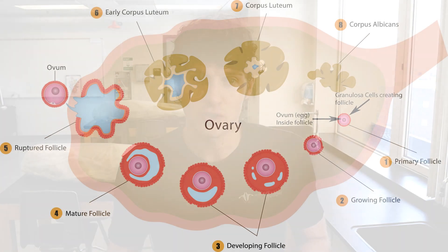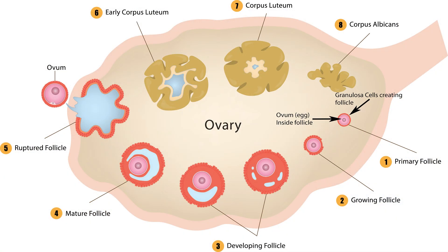A woman is born with about one to two million eggs and therefore follicles. When puberty happens, they're left with about 300,000. What you're seeing in this picture is an ovary with one follicle and an egg inside it. The follicle is a cluster of cells on the outside creating that circle, with the egg inside. This primary follicle gets larger and larger as it matures from stage one through four.